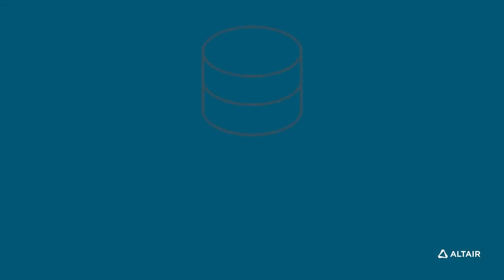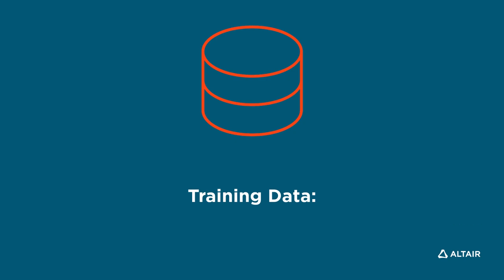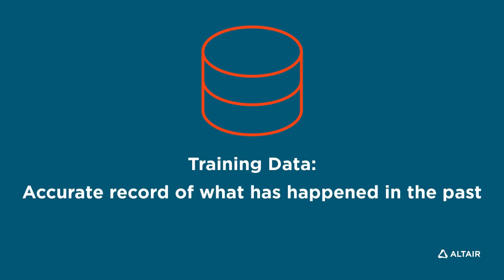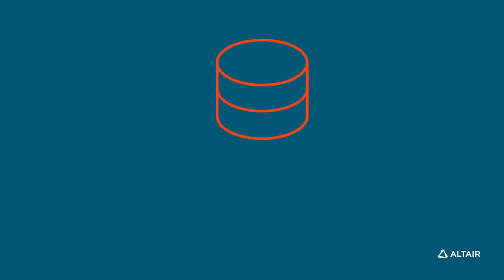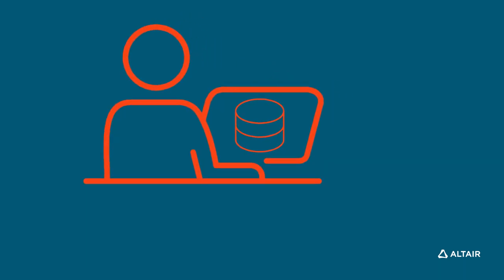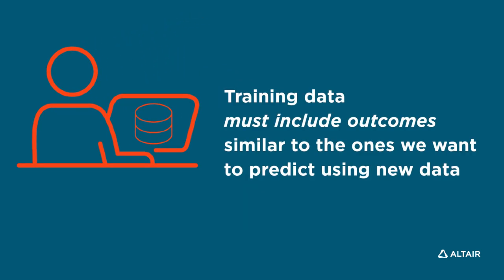The historical data, what we call training data, must be an accurate record of things that have happened in the past. For a predictive model to work, we need training data that includes outcomes like the ones we want our computers to make predictions about using new data.